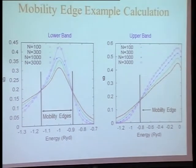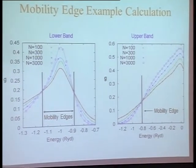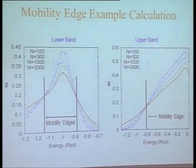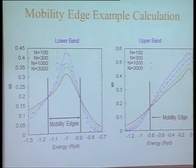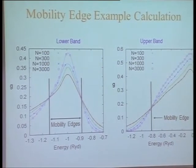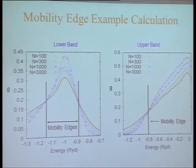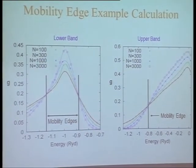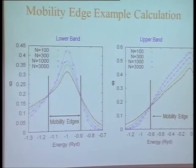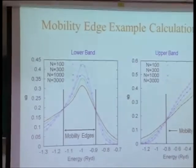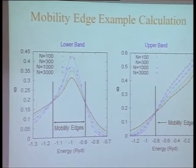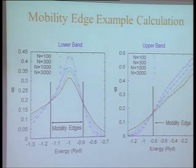What's being plotted here is the Thouless conductance versus energy, concentrating on the lower band and the upper band. What you see is that at very low energies in the tail, as you increase the size of the system, the Thouless conductance goes down, suggesting it's going to go to an insulator in the thermodynamic limit. Whereas here, it's a three-dimensional system, and the Thouless conductance increases with size, heading off to infinity as expected for an ohmic conductor. The crossing point shows you where the mobility edge is.